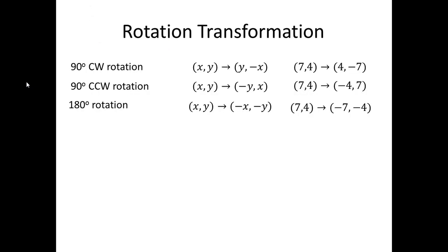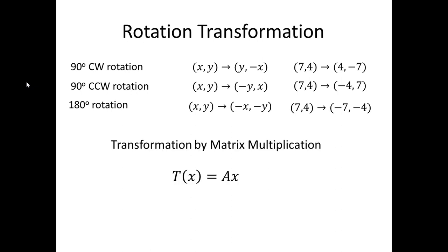In this installment, we're going to look at rotation transformations. There are three that were derived by coordinate rules in the first set of videos on transformations, one through four. Here we're going to derive a generalized case for rotation of any angle, and then use it for three specific examples: a 90-degree clockwise rotation, 90-degree counterclockwise rotation, and a 180-degree rotation. We're talking about transformations by matrix multiplication, where a matrix vector x is transformed by the standard matrix of the transformation A into mapped vectors in the transformed space, T sub x.